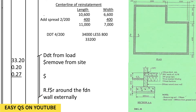Before we get to the end, we have the center line of reinstatement. We need to come and reinstate the soil all around the building. Remember we had excavated for the vegetable soil and we reduced the level. Now we need to return the soil so that it can be like normal ground, up to this ground level.